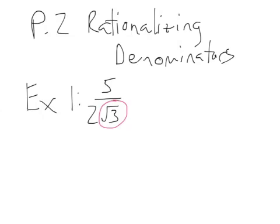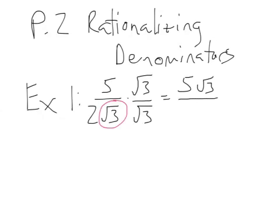I need to get rid of that somehow. In the case where there's no plus or minus signs, we're just going to multiply the top and bottom — the numerator and denominator — by radical 3. In the numerator I'll get 5 radical 3, and in the denominator I'm going to get 2 times radical 3 times radical 3, which is 3, so that's 2 times 3 = 6. Notice I don't have that radical in the denominator anymore. That's my final answer.